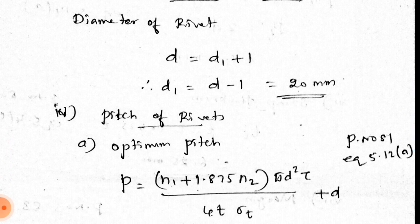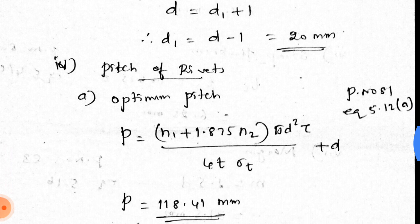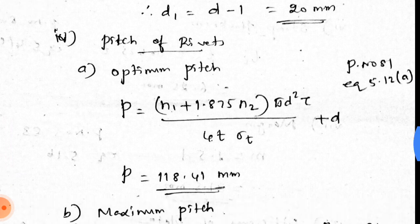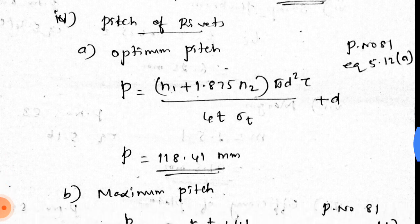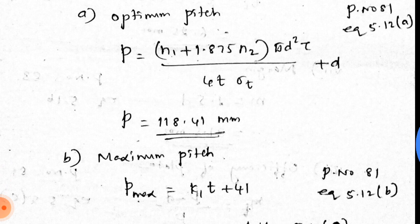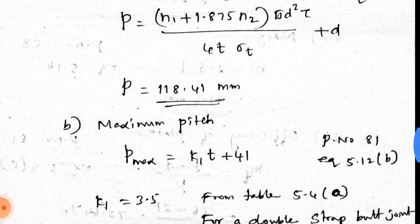The fourth step is the pitch of the rivet. There are three pitches: optimum pitch, maximum pitch, and transverse pitch. The optimum pitch formula is: P = (n1 + 1.875 × n2) × (5D² × tau) / (4t × sigma_t) + D, from page 81, equation 5.12a. Substituting all known values, the optimum pitch is 118.41 mm.